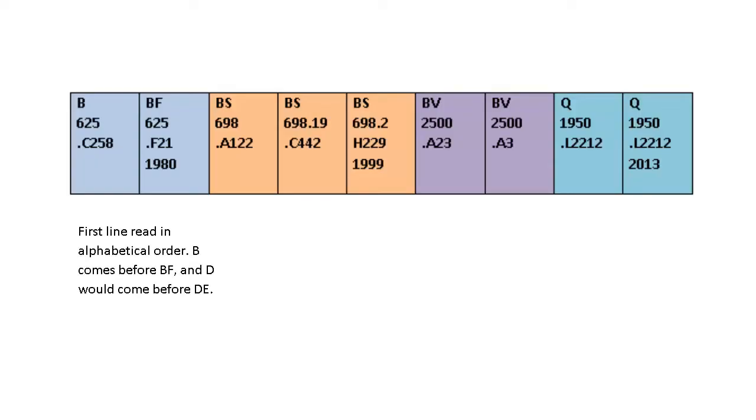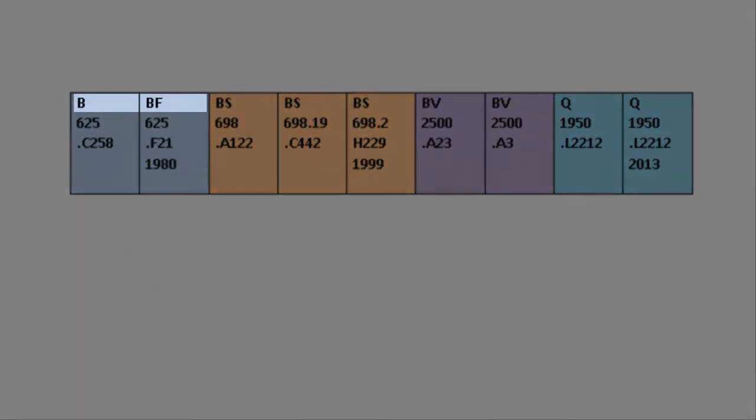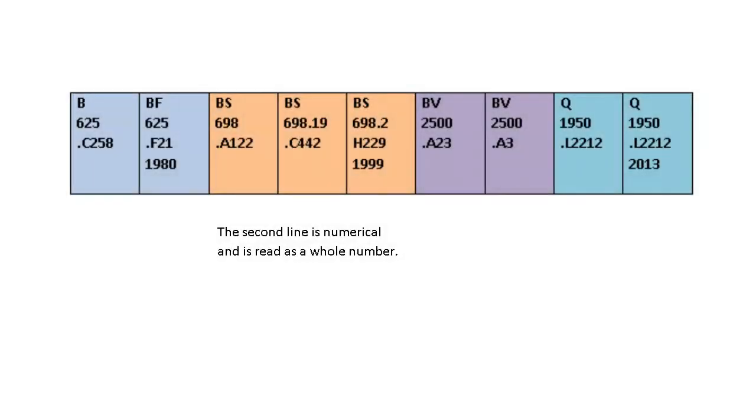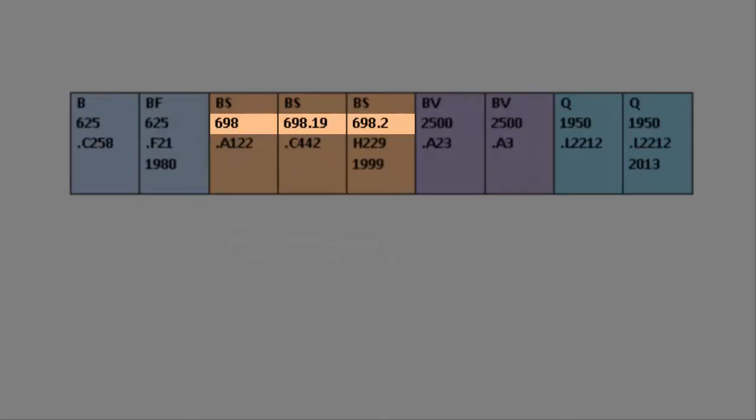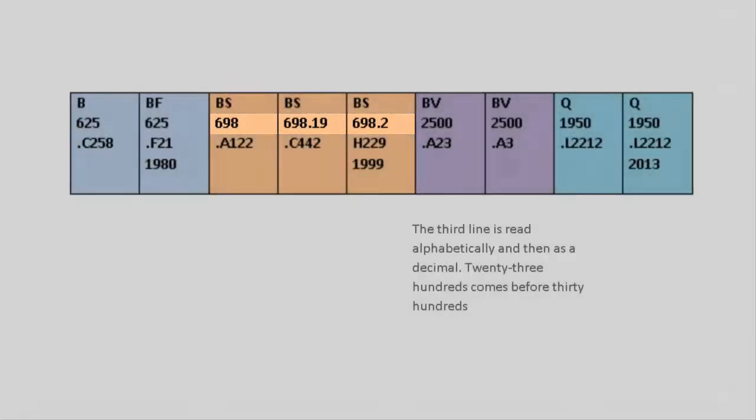The call numbers shown represent how books would be shelved according to this assigned letter. B comes before BF. The second line is numerical. 698 comes before 698.19, and 698.19 comes before 698.2.